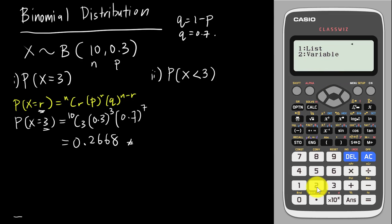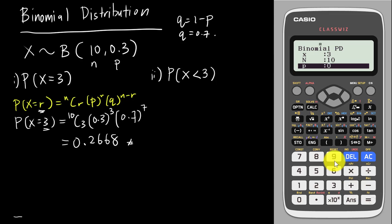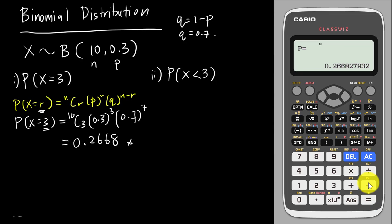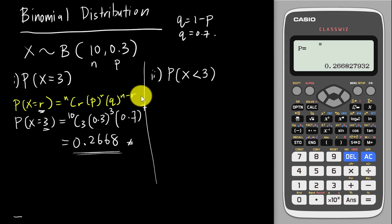Here you can insert your x, n, and p values. My x is 3, n is 10, and p (probability of success) is 0.3. After inserting everything, the calculator gives 0.2668 — exactly the same value as the manual calculation.